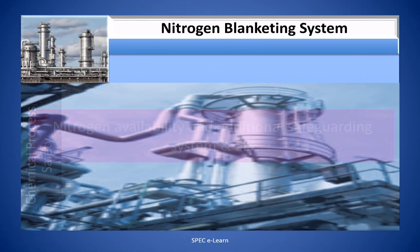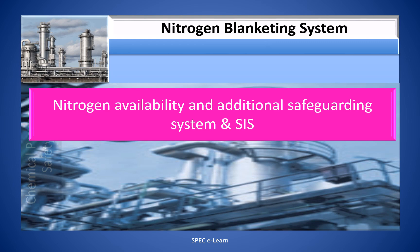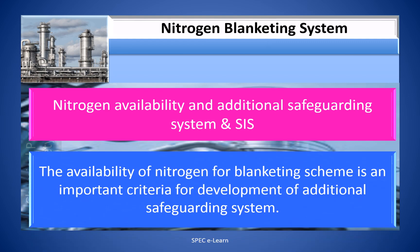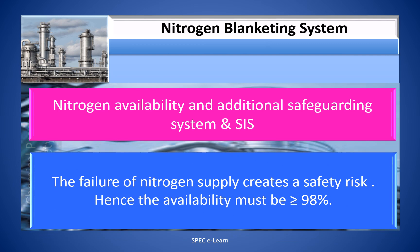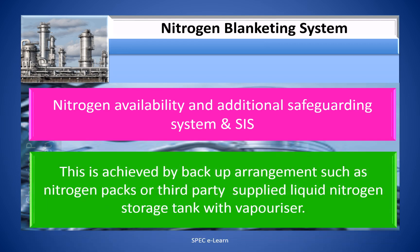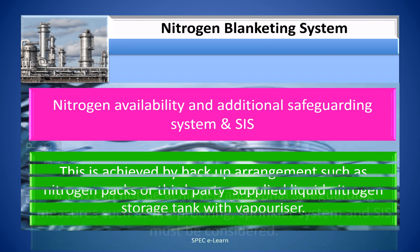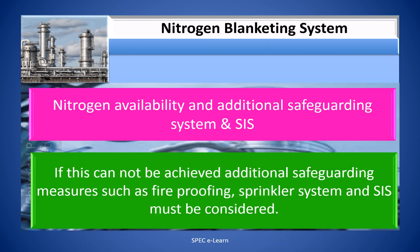Nitrogen Availability and Additional Safeguarding System (SAS): The availability of nitrogen for the blanketing scheme is an important criterion for development of an additional safeguarding system. Failure of nitrogen supply creates a safety risk. Hence, availability must be greater than or equal to 98%, achieved by backup arrangements such as nitrogen packs or third-party supplied liquid nitrogen storage tanks with evaporators. If this cannot be achieved, additional safeguarding measures such as fireproofing, sprinkler systems, and SAS must be considered.